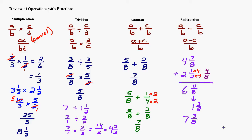If this were a subtraction problem, you would just subtract the whole number parts and subtract the fraction parts. For example, 4 and 7 eighths minus 2 and 4 eighths: 4 take away 2 is 2, and 7 take away 4 is 3, with the denominator staying the same — giving 2 and 3 eighths. Adding and subtracting are basically almost exactly the same; the only difference is whether you add or subtract in the numerator.